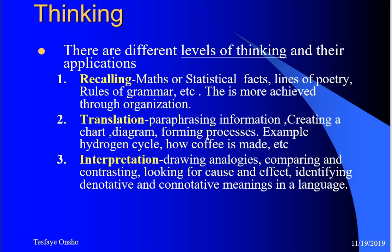Interpretation is more complex than the previous two levels. It involves drawing analogies, comparing and contrasting conceptual information, looking for cause-and-effect relationships, and finding denotative and connotative meanings within language. These are the ways we go deeper into information processing — our thinking level is now deeper and more complex. When we do those processes, we actually remember them better. There's a saying that much of what we do, we remember — and that is what this level is about.